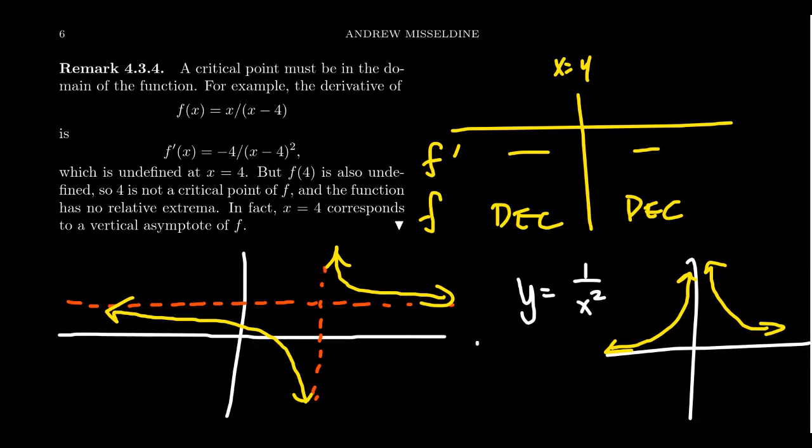The derivative of this function, of course, would be -2/x³, for which if we were to draw the sign chart, we get something like your critical number 0.